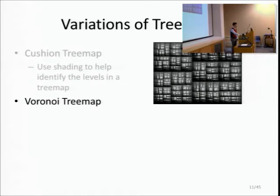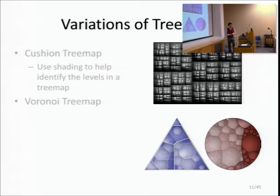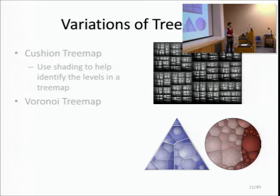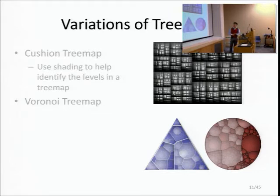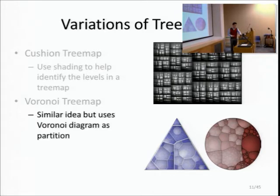Another nice variation is the Voronoi tree map. It's the same idea as a tree map - using the same structure to show the tree hierarchy - but it uses a Voronoi diagram, which is popular in computational geometry for partitioning space. As a result, tree map boundaries don't have to be rectangles; they can be circles, triangles, or other shapes.